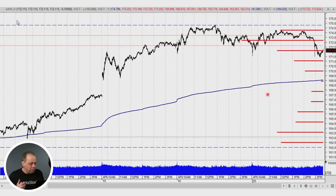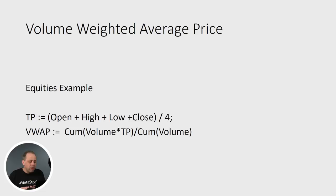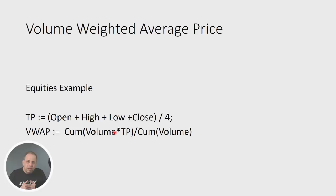For a volume-weighted average price — to explain what that is — this is an example for equities. What they do to calculate VWAP is they figure out what's called a typical price, which is the open plus the high plus the low plus the close divided by four. That gives you a median average price for the day. The volume-weighted average price is then the total of that typical price times volume for the area you're looking at. They add up all the cumulative volume times typical price for the current data set and divide that by the total volume. That's the Metastock formula you could use — it gives you the typical price for the whole chart up to that particular time.